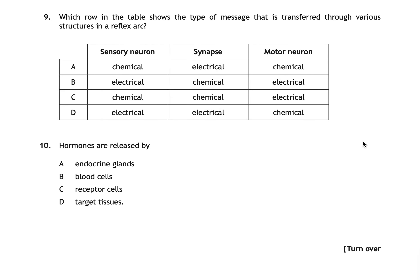Question nine is about control and communication. It asks which row in a table shows the type of message transferred through a reflex arc — sensory neuron, synapse, and motor neuron. The correct answer is B: electrical, chemical, electrical. Any message passing along a neuron is an electrical impulse, but messages travelling across the gap between neurons — the synapse — are carried by chemical messengers called neurotransmitters.